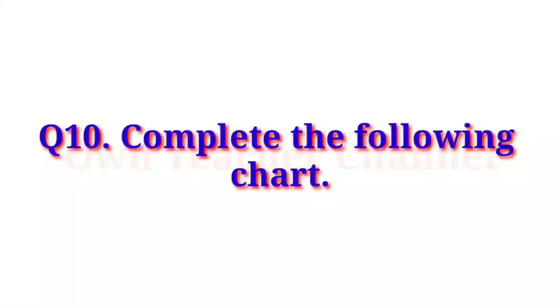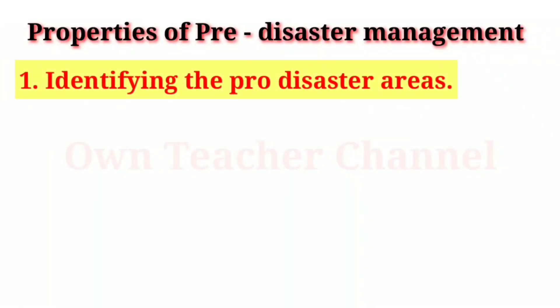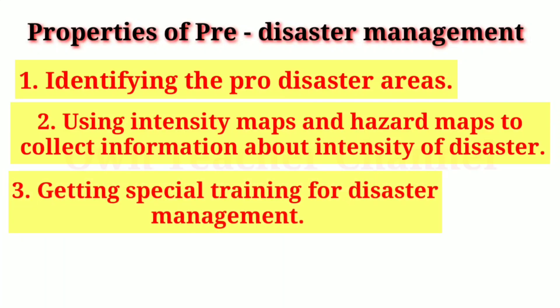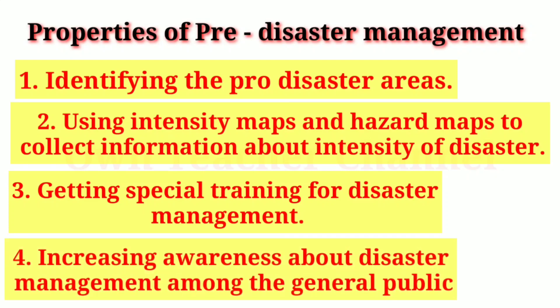Question 10: Complete the following chart. Properties of pre-disaster management: 1) Identifying the pro-disaster areas. 2) Using intensity maps and hazard maps to collect information about the intensity of disaster. 3) Getting special training for disaster management. 4) Increasing awareness about disaster management among the general public.